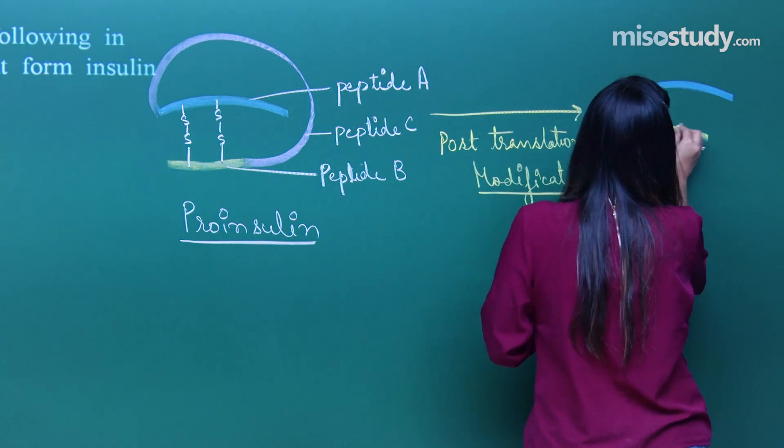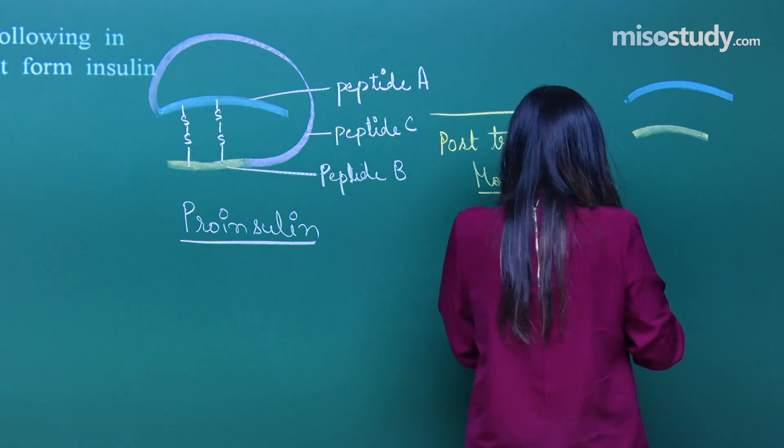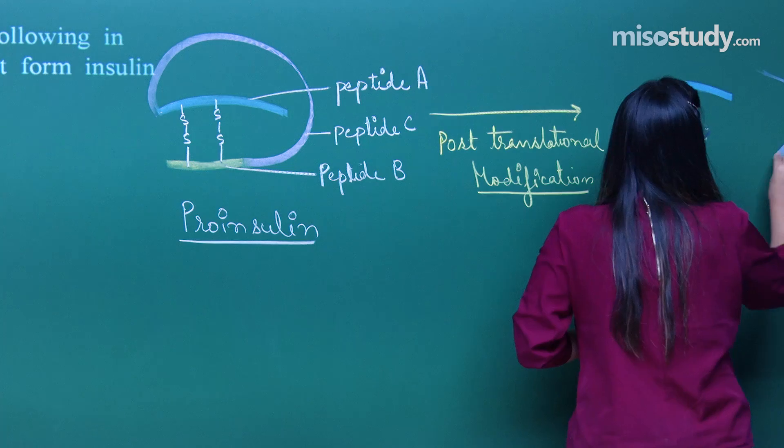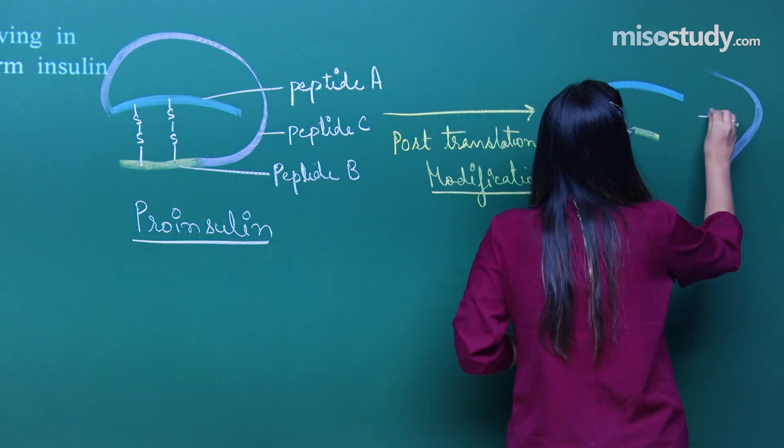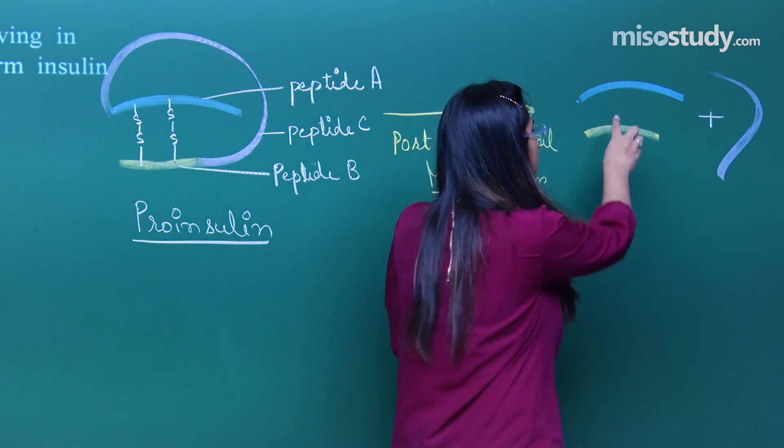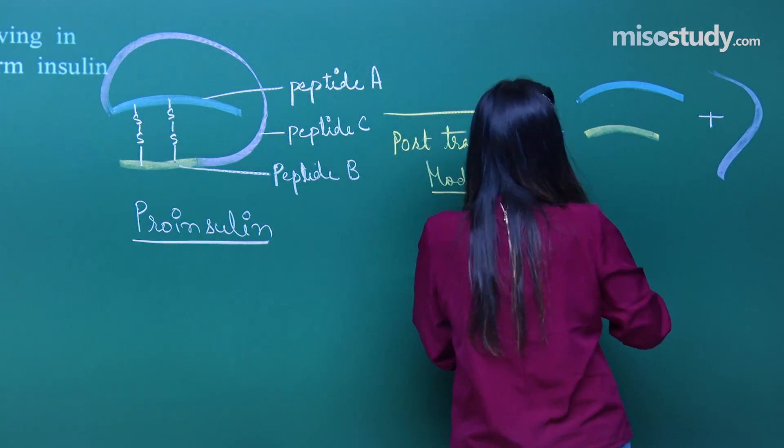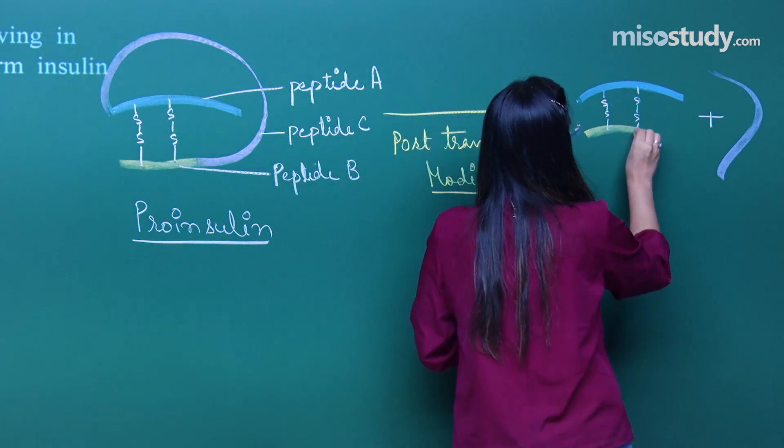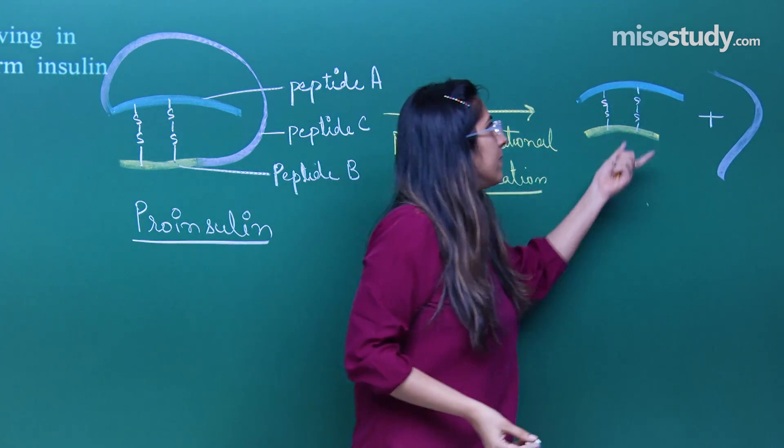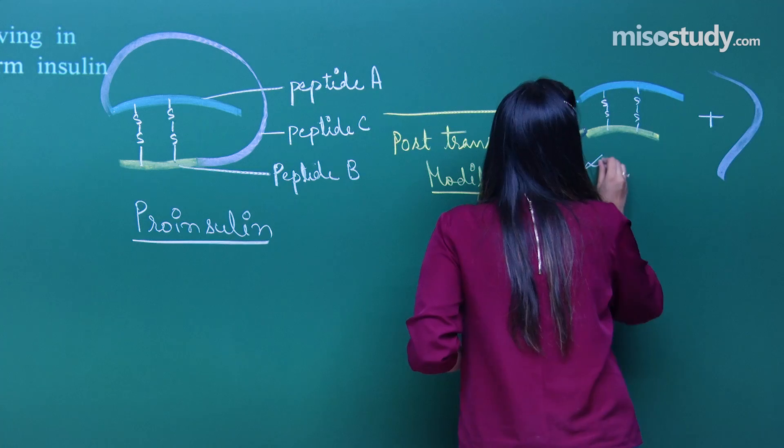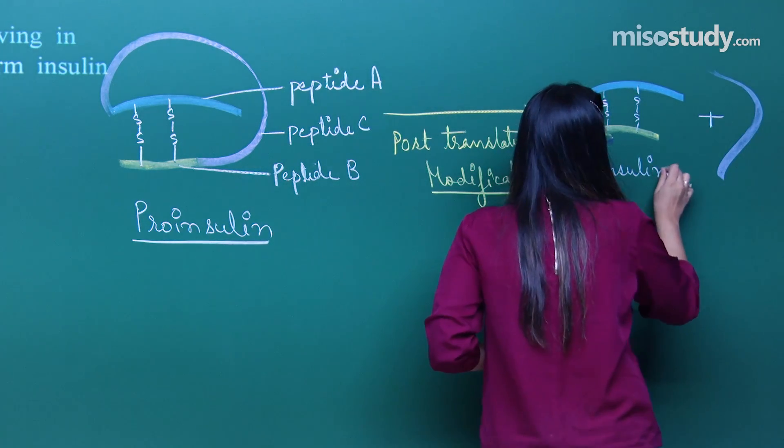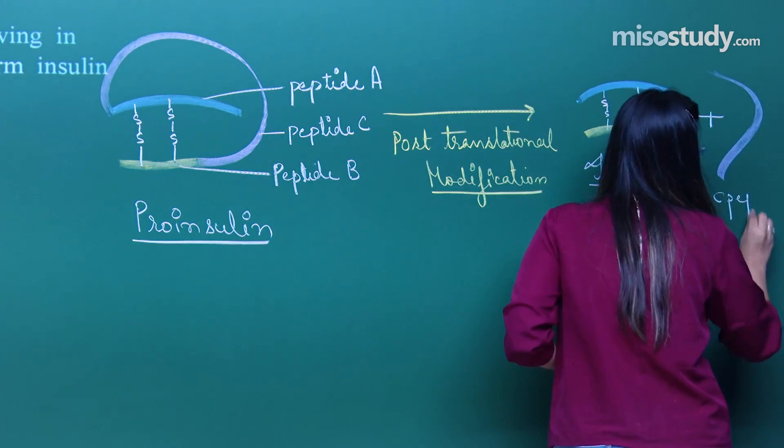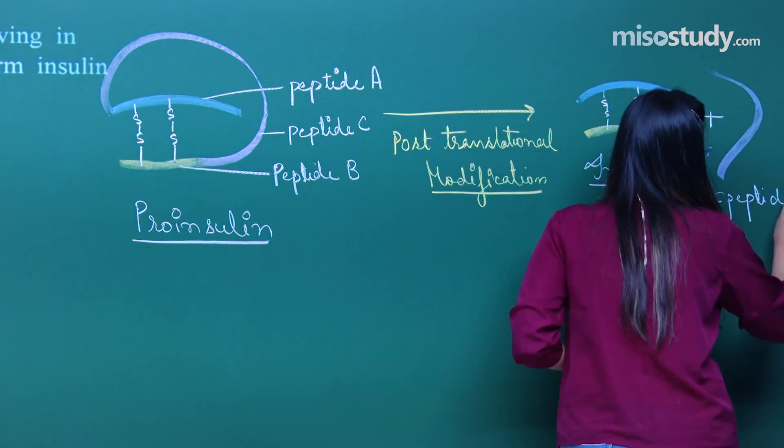Now these are the two chains that will be left and another is that this is another chain, peptide C will be left. And in between these two chains, what I have is a disulfide bond present. This whole structure is called active form or insulin and what is this? This is C-peptide.